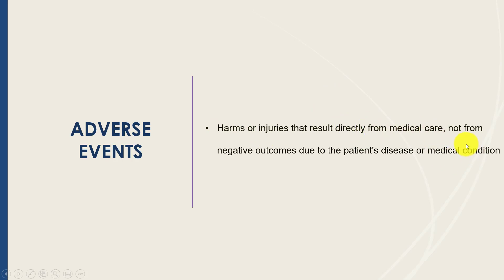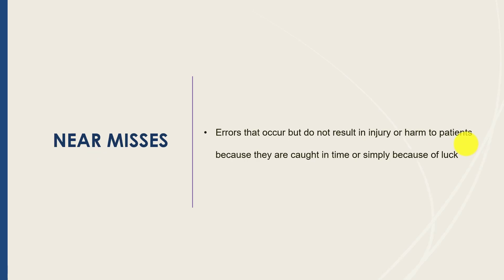Near misses are errors — a slip, lapse, or mistake — that fortunately do not result in any injury or harm to the patient, either because the error is caught in time or by luck. Near misses are just as important to report and study as adverse events. Just because we got lucky or caught the error before it caused harm doesn't mean it won't cause harm next time. Patient safety frameworks require that both adverse events and near misses be reported to the system and studied so we can improve care.